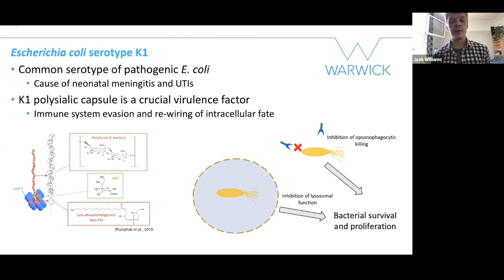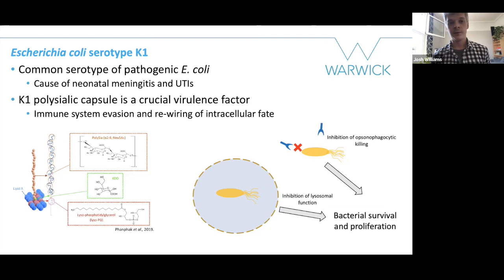E. coli K1 can inhibit opsonophagocytic processes by inhibiting the C3A, C3B classical immune response. And also once phagocytosed inside of human cells, they can inhibit lysosomal function so they can persist as vacuoles inside the cell. This is what allows bacteria, normally bound to the intestines, to become present in the bloodstream and also to cross the blood-brain barrier to cause meningitis.